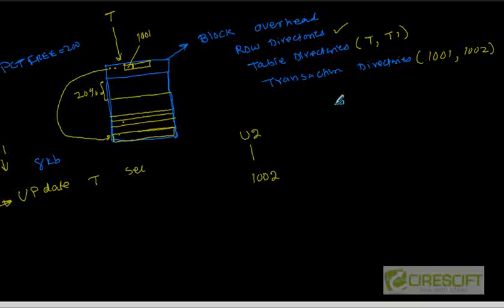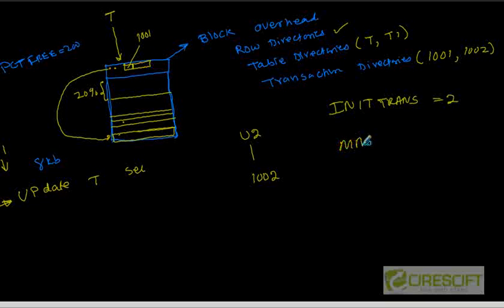The parameter init trans tells me how many slots are available to start with. If init trans is 2, that means my transaction directory is an array which can contain, to begin with, 2 elements. Another parameter called max trans — if max trans is 4, then this array can grow up to a maximum of 4 transaction IDs.